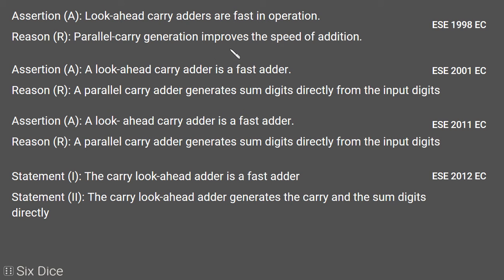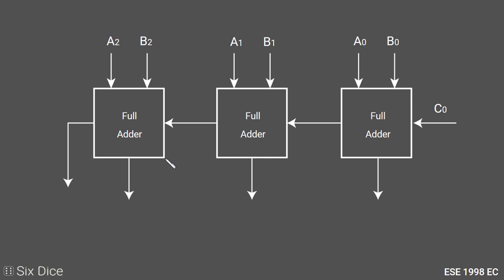For the first question, the reason is: parallel carry generation improves the speed of addition. For the second and third questions, the reason is: a parallel carry adder generates sum digits directly from input digits. The fourth question's statement is: the carry lookahead adder generates carry and sum digits directly. Now let's understand why we use a carry lookahead adder.